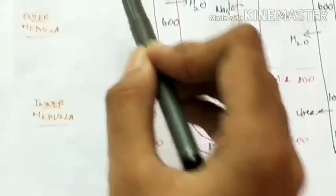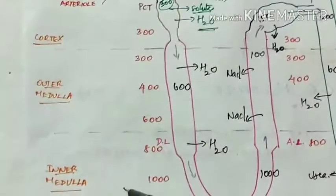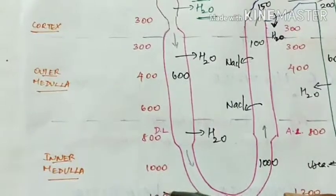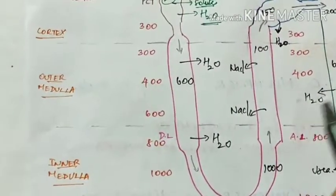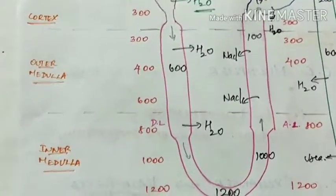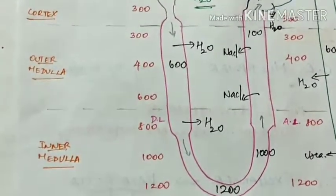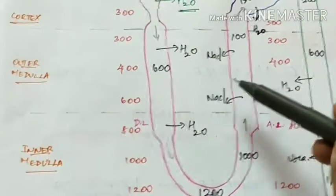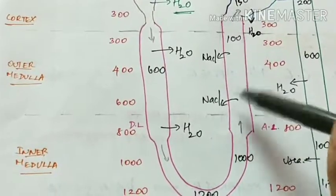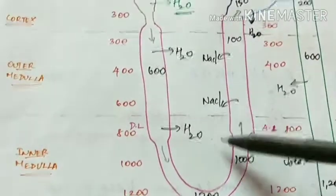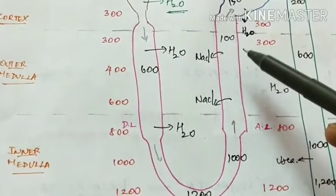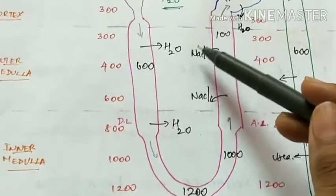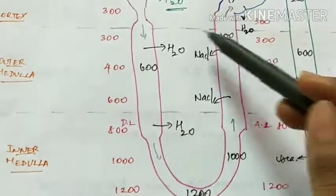In the cortex, outer medulla, and inner medulla, going downward the osmolarity keeps on increasing. The main reason for the hyperosmolarity of the medulla is the active reabsorption of sodium chloride and other solutes from the ascending limb of the loop of Henle into the medullary interstitium, which increases the medullary osmolarity.